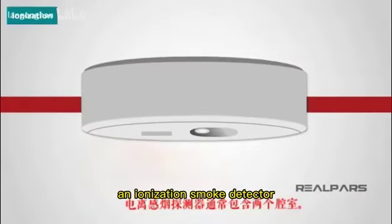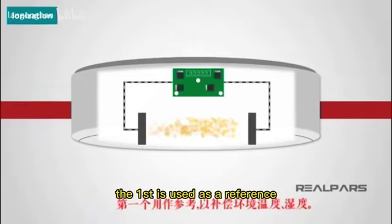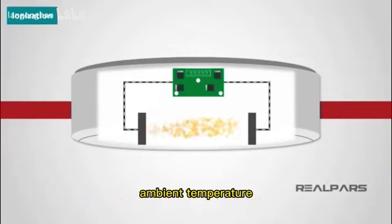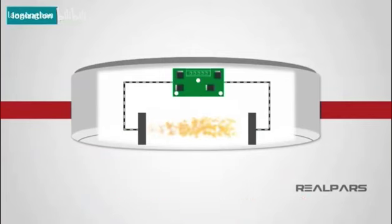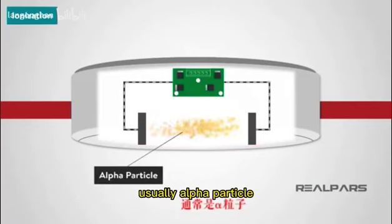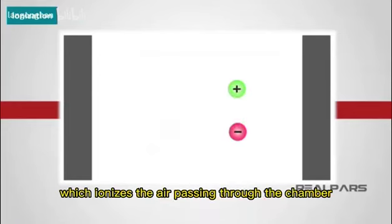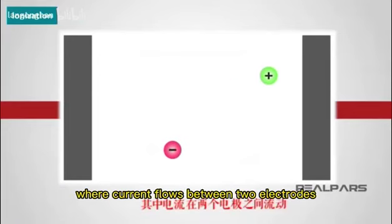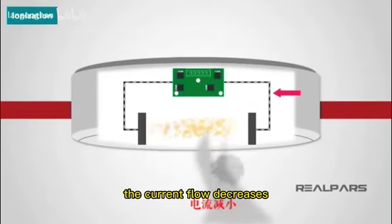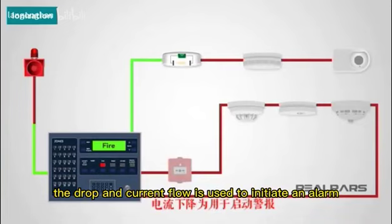An ionization smoke detector generally contains two chambers. The first is used as a reference to compensate for changes in ambient temperature, humidity, or pressure. The second chamber contains a radioactive source, usually alpha particle, which ionizes the air passing through the chamber where current flows between two electrodes. When smoke enters the chamber, the current flow decreases. The drop in current flow is used to initiate an alarm.